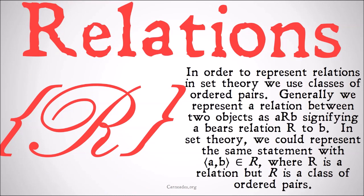Fortunately, we have that. In order to represent relations, we're going to use classes of ordered pairs. Generally, we represent a relation between two objects as A R B, signifying A bears relation R to B. In set theory, we could represent the same statement with the ordered pair (A, B) is a member of R, where R is a relation, but R in italics is a class of ordered pairs.